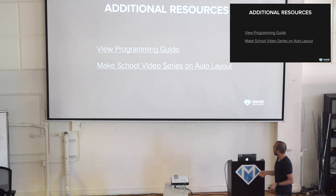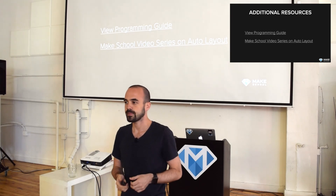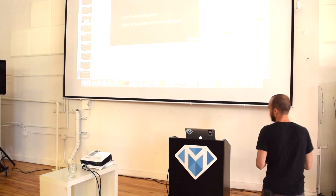Additional resources you should look at are the View Programming Guide provided by Apple — it's a multi-page document that describes all the essentials of how views are rendered and which different methods you can and should override. And if you haven't done a lot of auto layout, I highly recommend taking a look at the Make School video series on auto layout. Now I'm going to switch to the second presentation that belongs to this one.